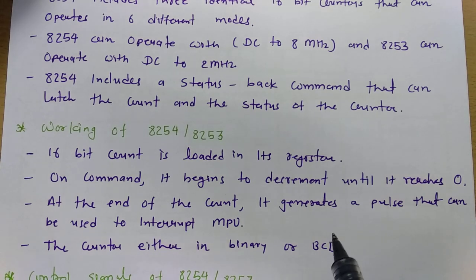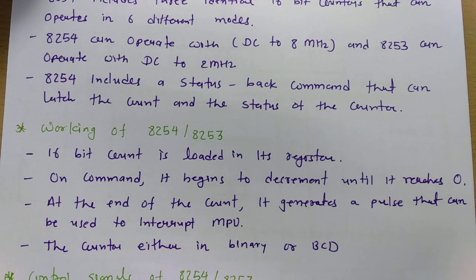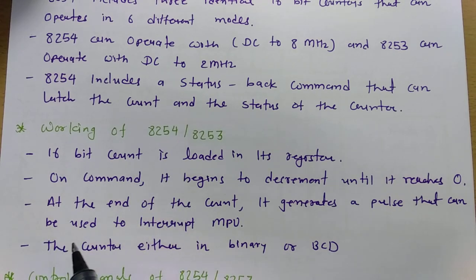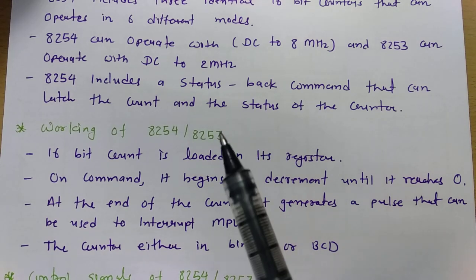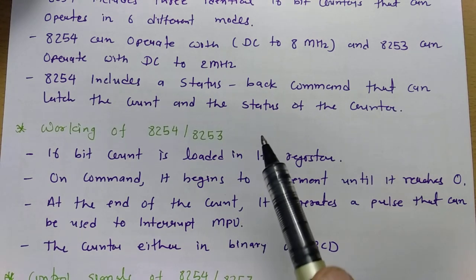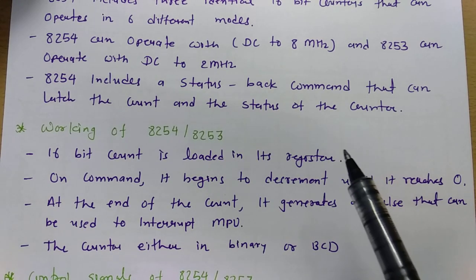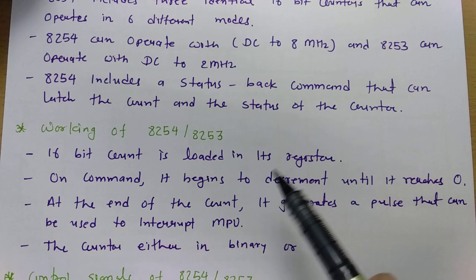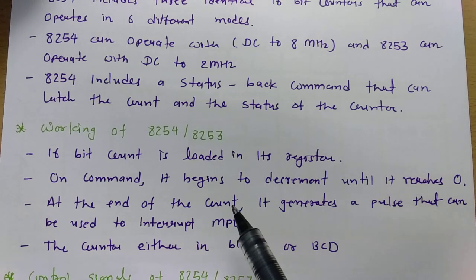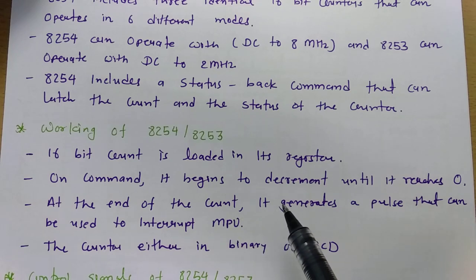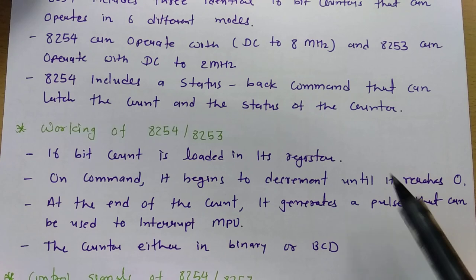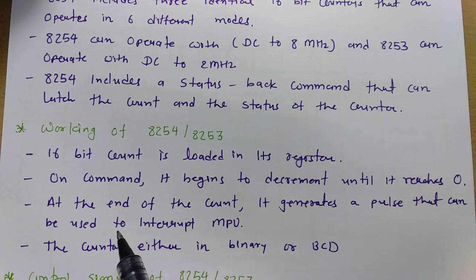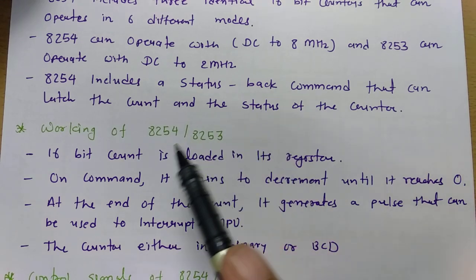The counter can operate in either binary or BCD mode — selectable through the control register. All 3 counters are 16-bit and function in 6 different modes. The count is loaded first, then on command the 8254 starts decrementing until it reaches 0 and sends an interrupt to the microprocessor.